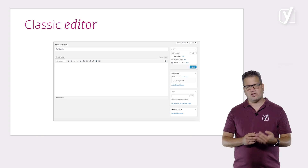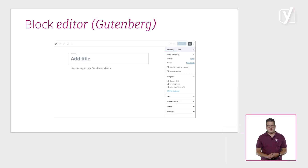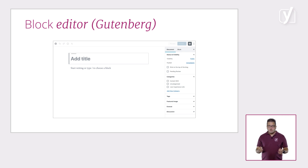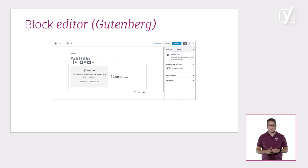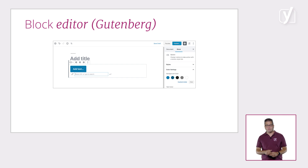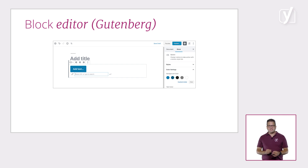With the new block editor, also known as Gutenberg, you can do everything with blocks. You need text and images side by side? No problem — use the media and text block. You want to add a table or a button? No sweat — use the button or table blocks. Each content element has its own block and it makes the editing of the content super easy.